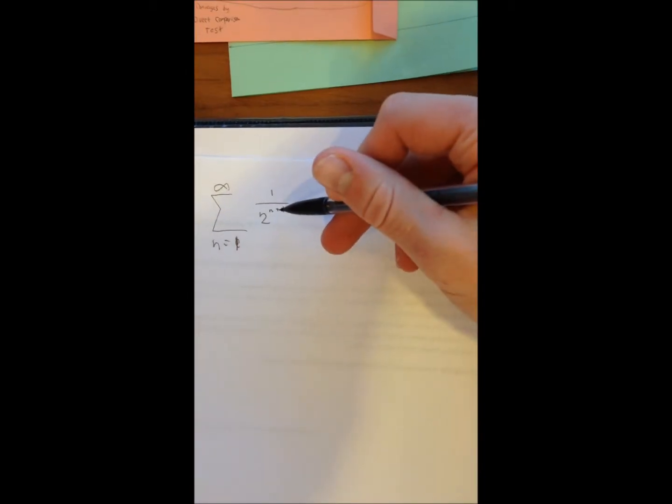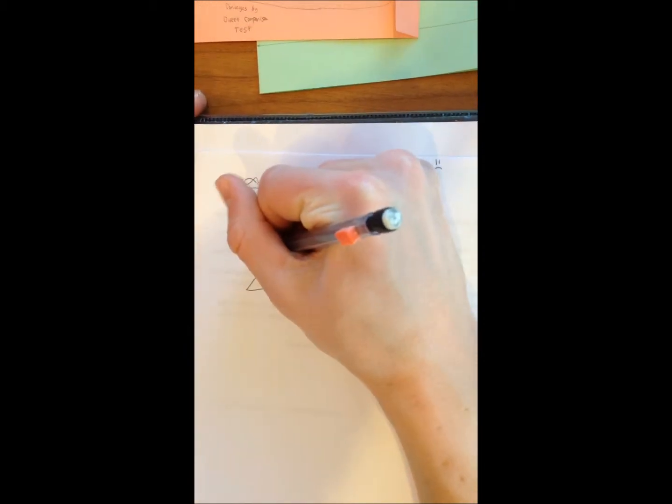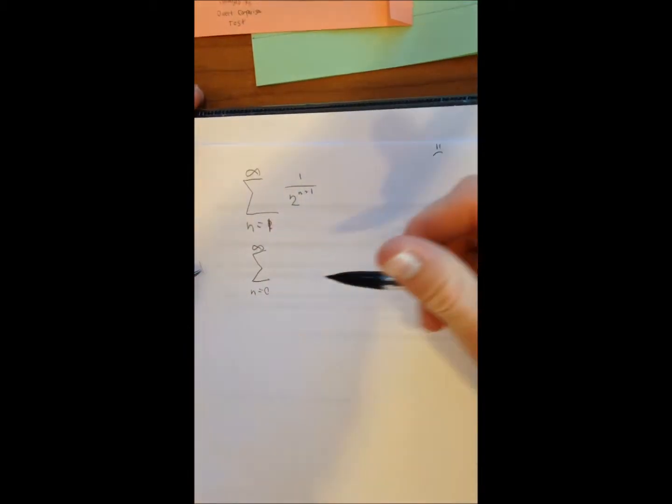In order to make it a geometric sequence, we had to have n equals 0. And so we had to make this 2 to the n plus 2.